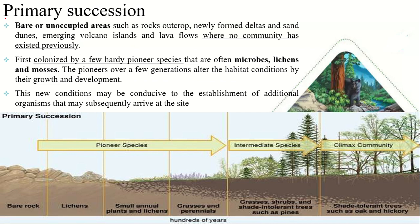Primary succession begins in barren areas. For example, consider an underwater volcanic eruption that forms a new island, or a bare rock exposed by a retreating glacier. In such cases, there is no established ecosystem yet on that barren piece of land. This is where primary succession comes into picture — there is a new habitat waiting to be colonized for the first time.